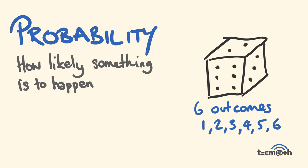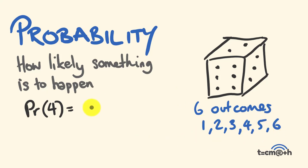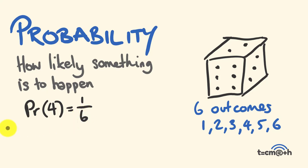I'm going to ask a couple of probability questions. What's the probability of rolling a 4? Out of the 6 possible outcomes, there is only one 4 — there is a possibility of 1 out of an entire 6 possible outcomes. So there's a 1 out of 6 chance.